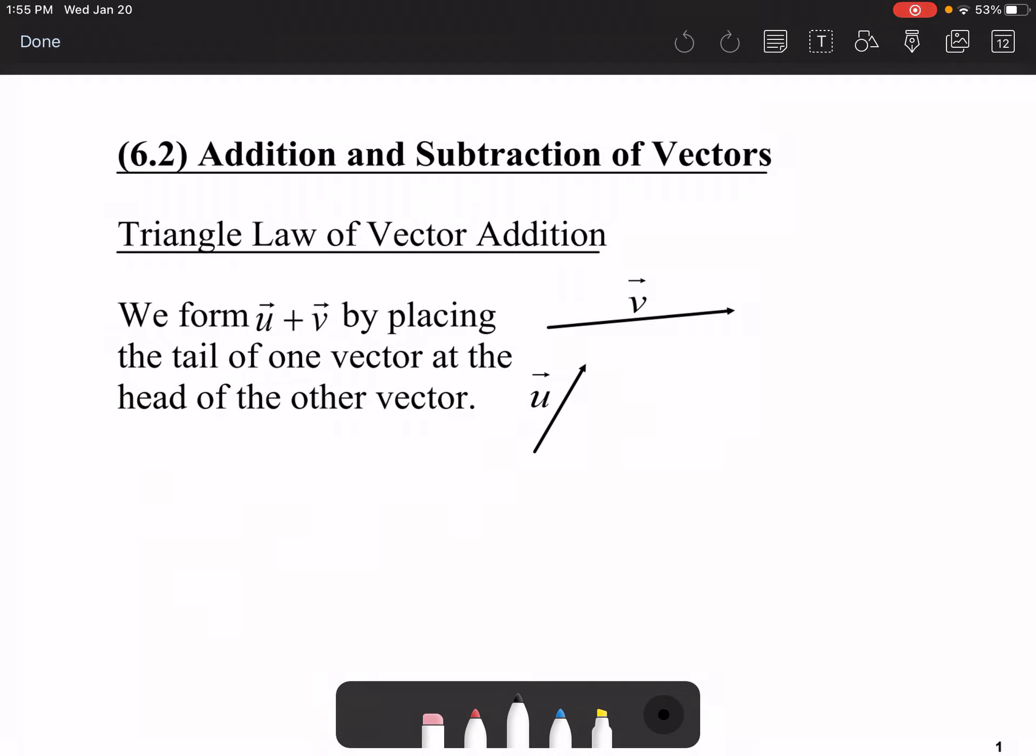One of the possibilities is using the triangle law. In order to use the triangle law, what you do is you're going to be placing the tail of one vector to the head of the other. Remember that this is called a tail, and this is called a head.